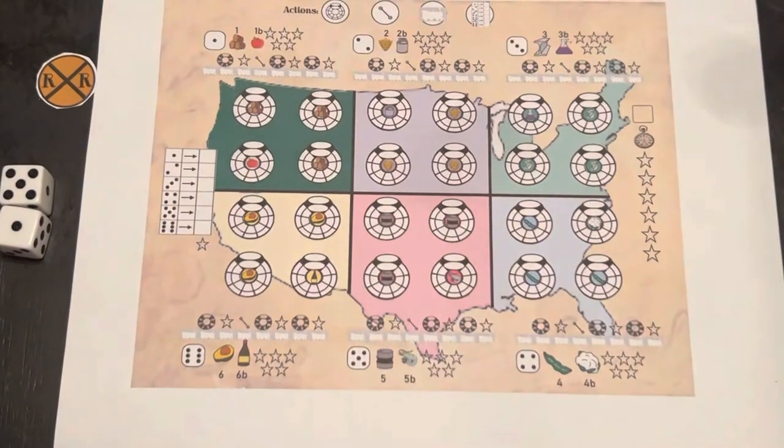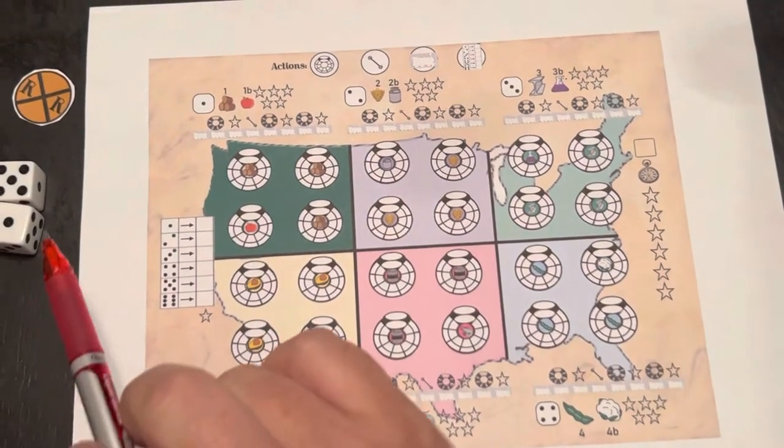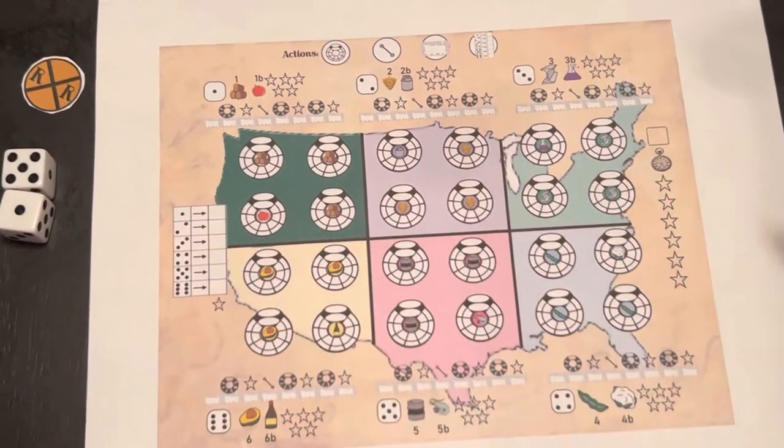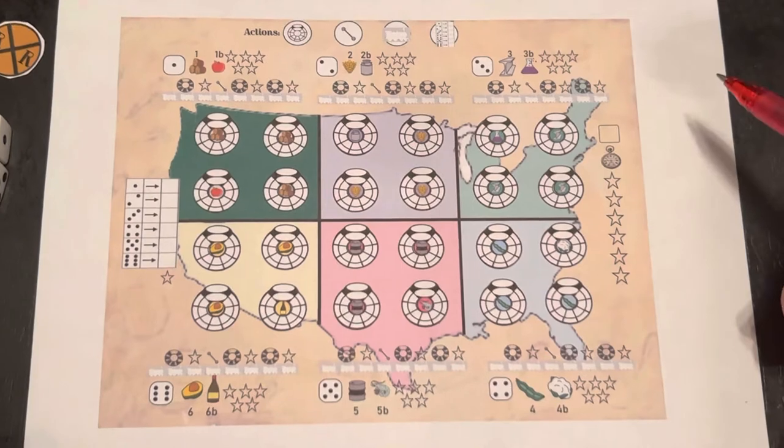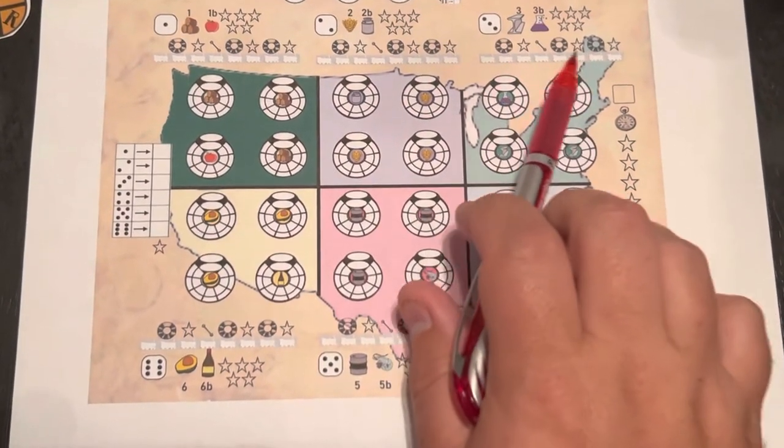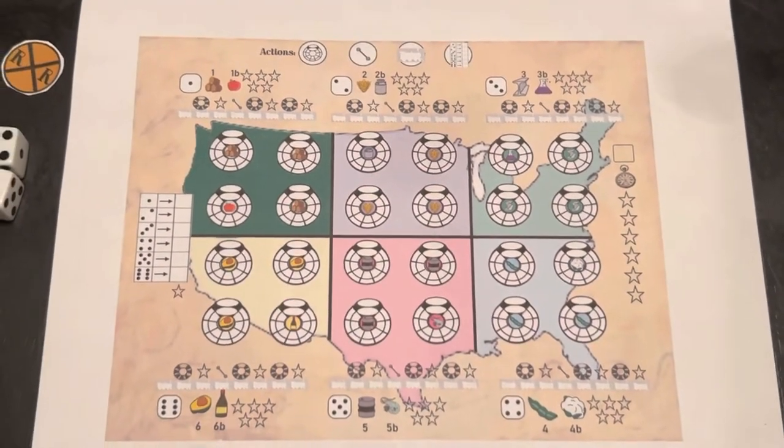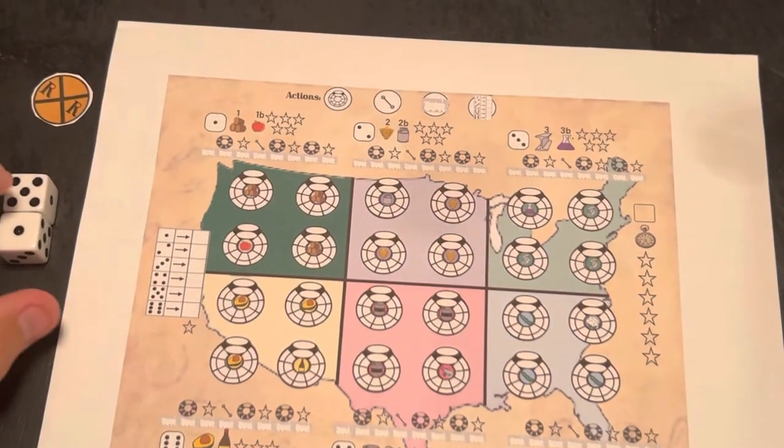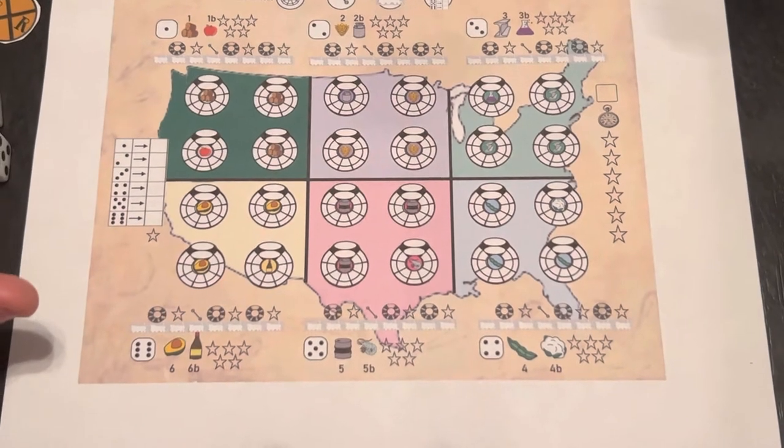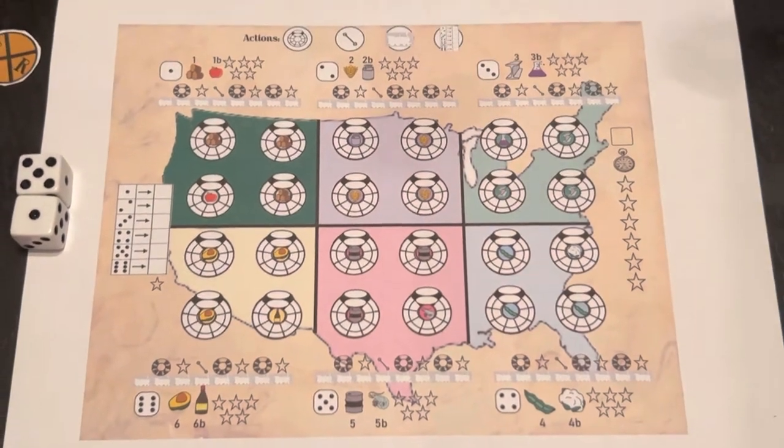Alright, so this game, we're going to take a look here at our player sheet and talk about some of the elements happening here. You have two dice that's going to affect all the players. This is kind of a sandbox-y game where you have a lot of options to score points. Your goal is to score 25 of these stars as you can see up here.